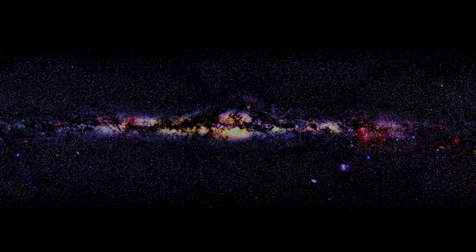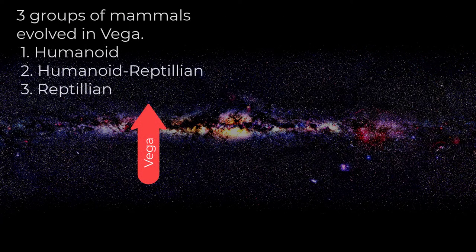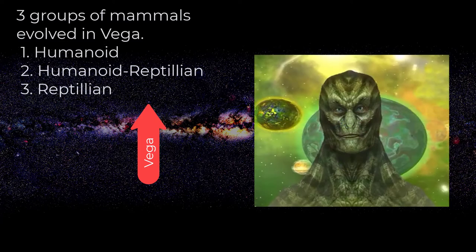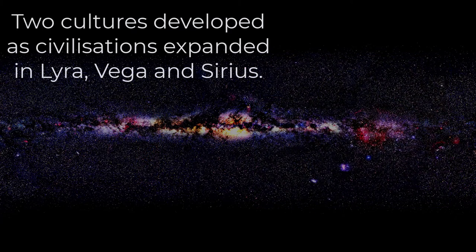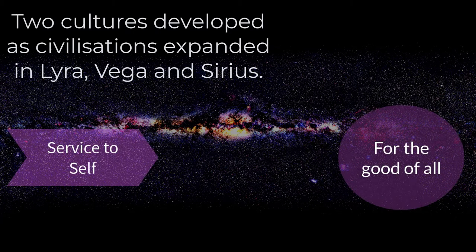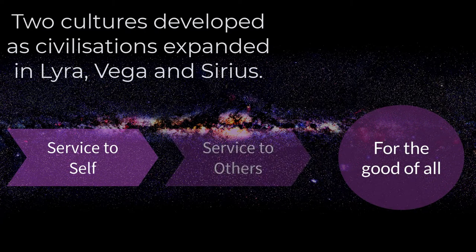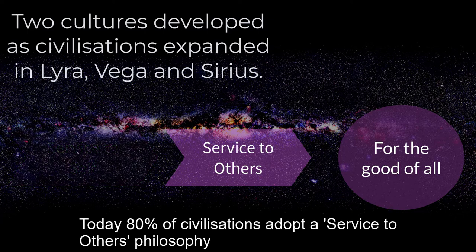Three groups of mammals evolved in Vega: humanoid, humanoid reptilian, and reptilian. Two cultures developed as civilizations expanded in Lyra, Vega and Sirius: service to self for the good of all, and service to others for the good of all. Today, 80% of civilizations adopt a service to others philosophy.